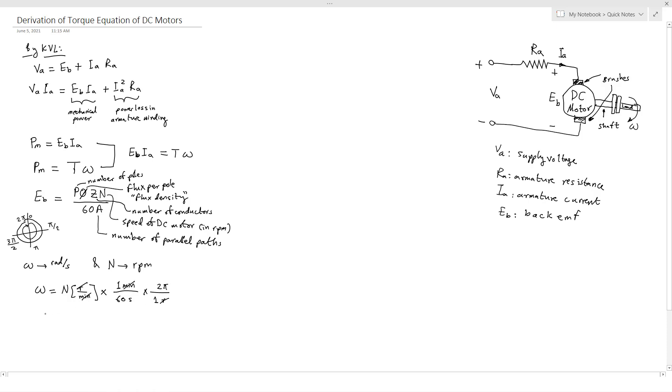So we can say here that omega will equal 2 pi N divided by 60. And if we have omega and we want the speed in RPM, so we can say also N equals 60 omega divided by 2 pi.